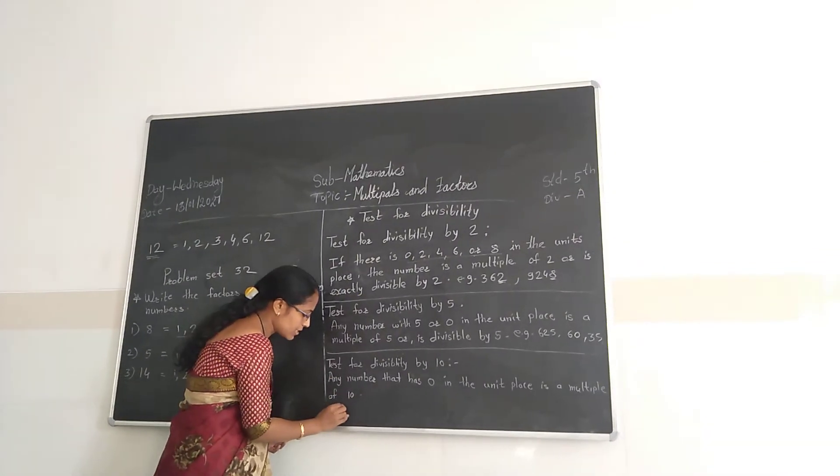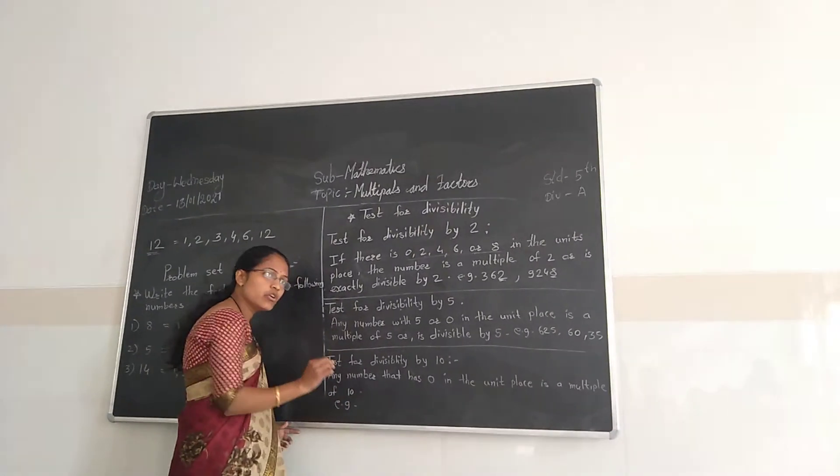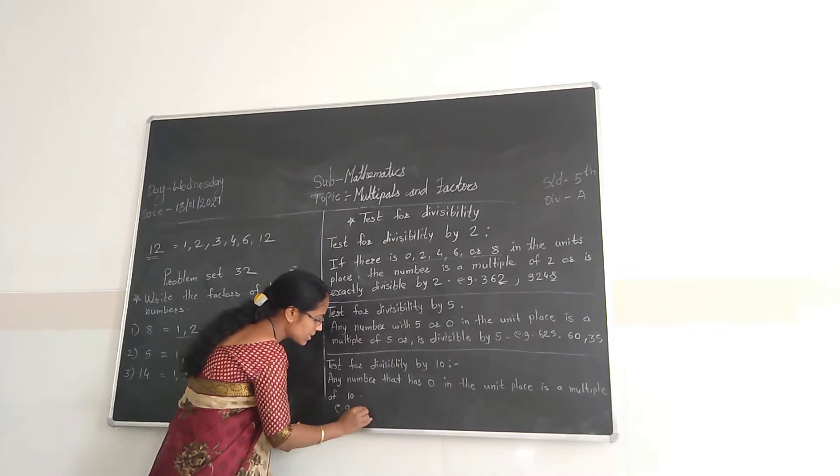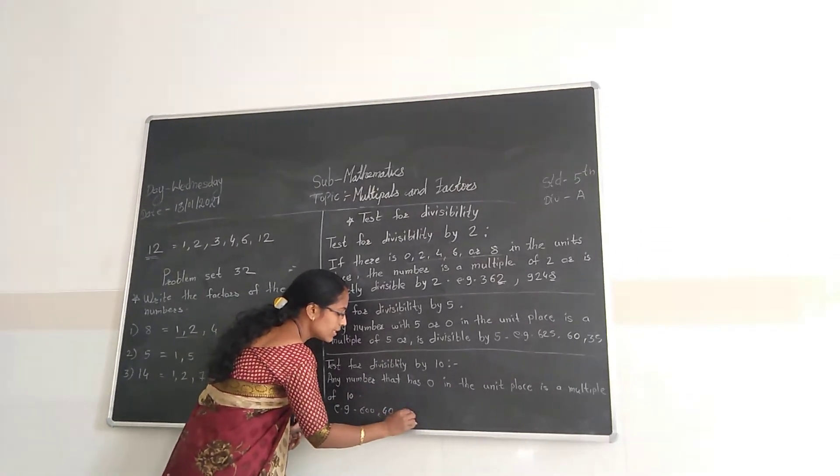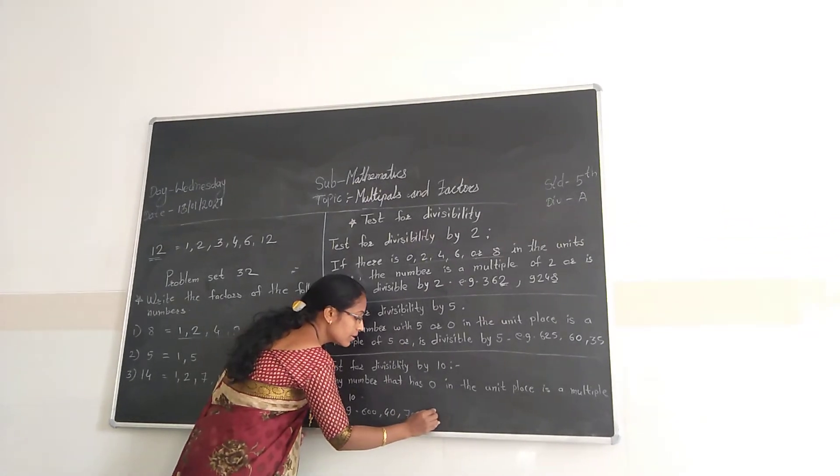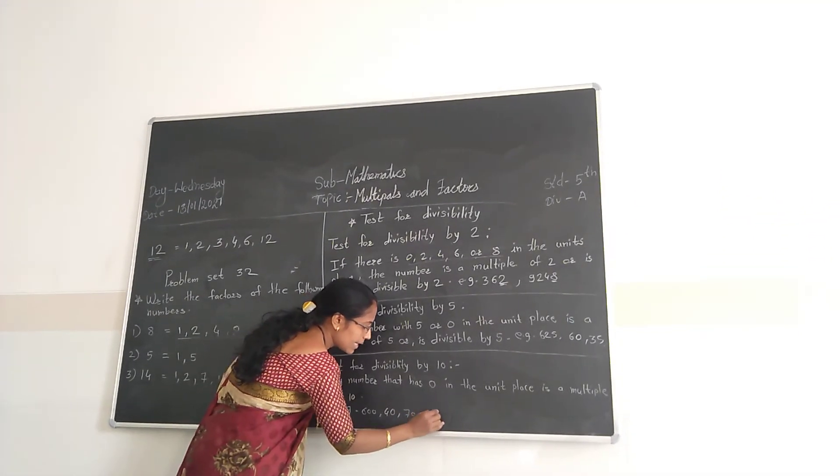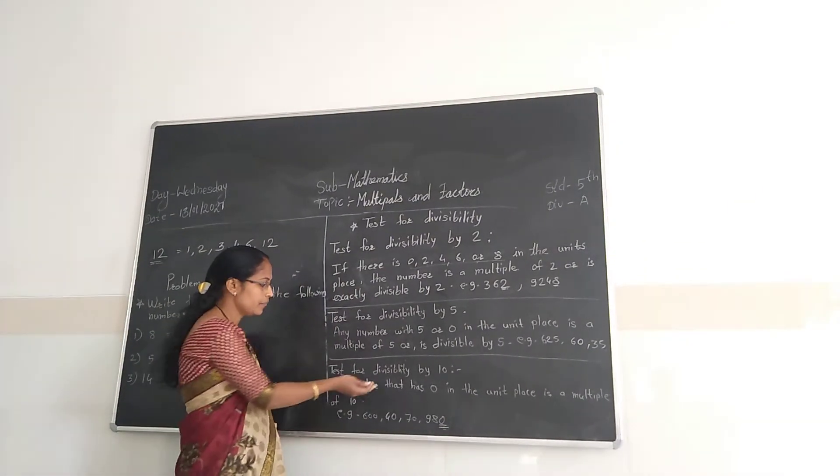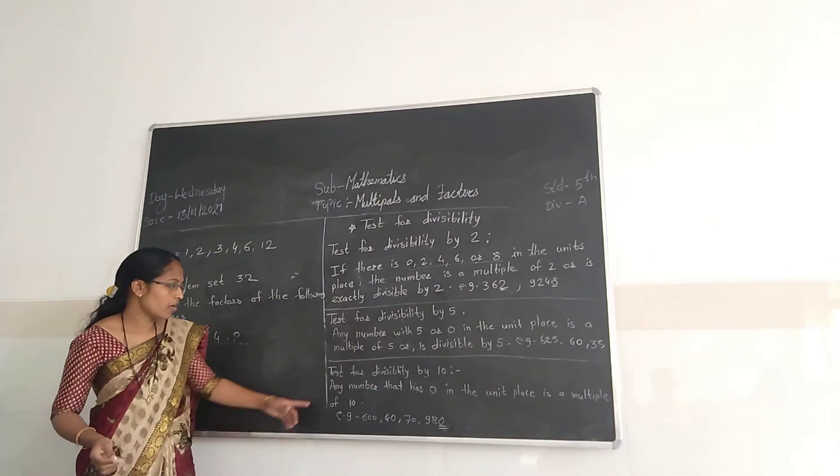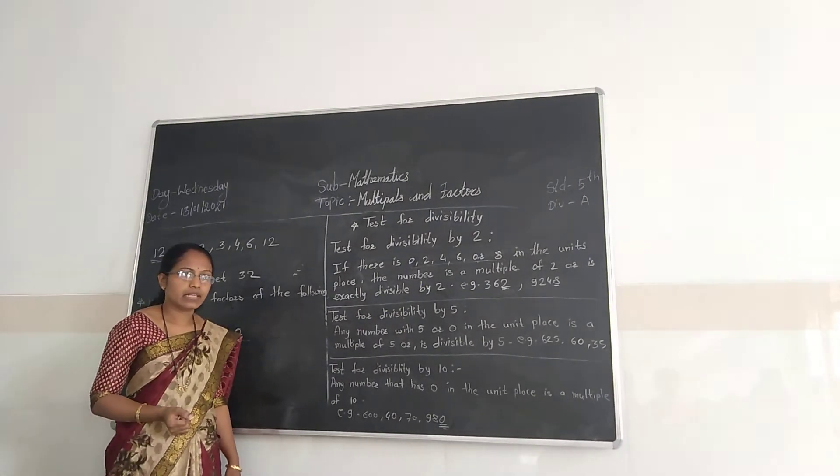Means any number, for example, having 0 in the unit place: 640, 70, 980. Only the unit place must be 0. That number is divisible by 10. Okay?